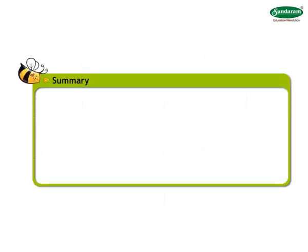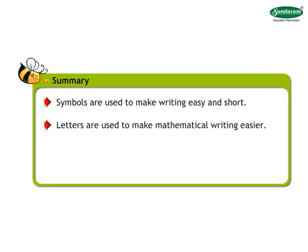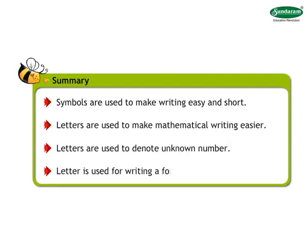Let's summarize. Symbols are used to make writing easy and short. Letters are used to make mathematical writing easier. Letters are used to denote unknown number. Letter is used for writing a formula or a rule.